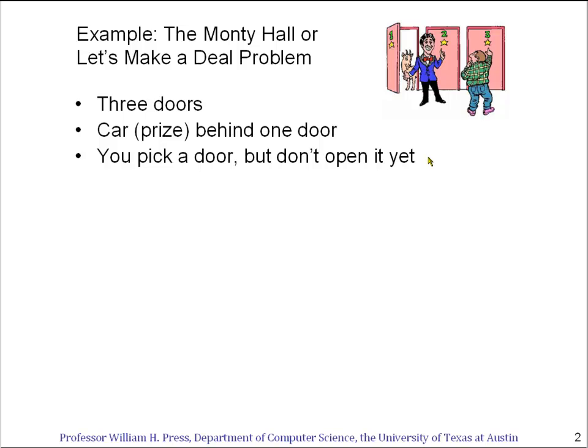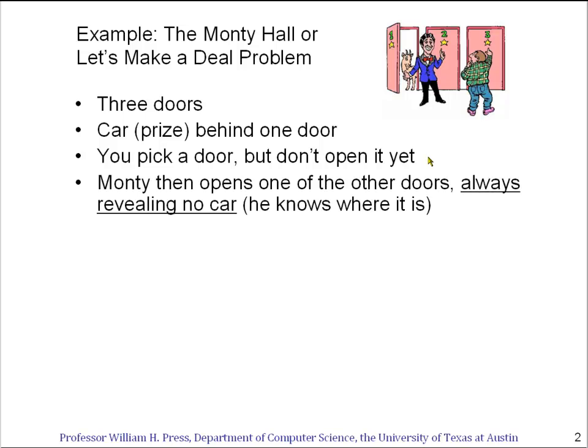What happens first is that Monty, the game host, opens another one of the doors, and he never opens the door that has the car behind it. He always reveals no car. How does he manage to do this? Well, he actually knows which door the car is behind.